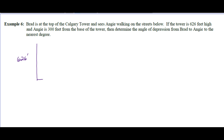Brad is at the top of the Calgary Tower and sees Angie walking on the streets below. The tower is 626 feet high and Angie is 300 feet from the base. We want the angle of depression from Brad to Angie to the nearest degree. We've got an angle of elevation and an angle of depression, and they're the same because these lines are parallel — the street and the horizon are parallel. Angle of depression is measured from the horizon down.